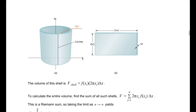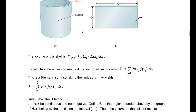If we sum all those shells up, we get a Riemann sum from i to n of 2 pi xi f of xi delta x. Now if we let n go to infinity — we want an infinite number of these thin shells — then we get the volume equal to the integral from a to b of 2 pi x f of x dx. This leads us to our rule: the shell method.